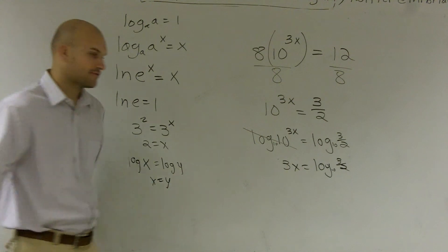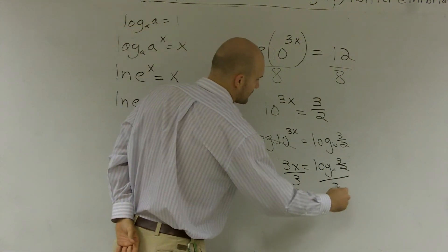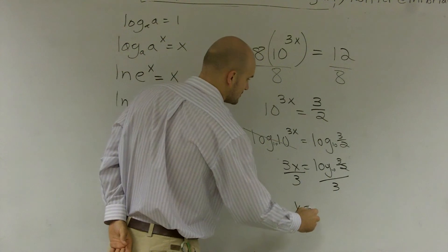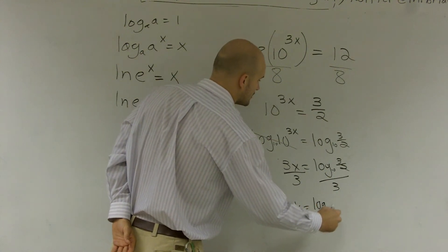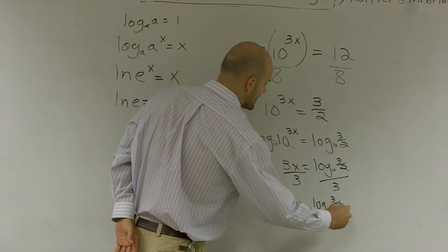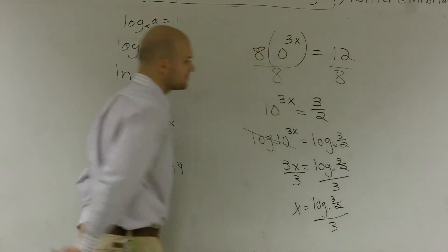Then to get rid of the 3, just divide by 3. So you have x equals log base 10 of 3 halves. Wouldn't it just be log of 3 halves? Yes.